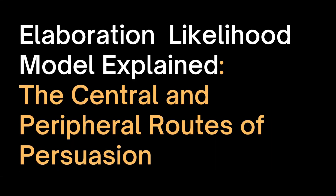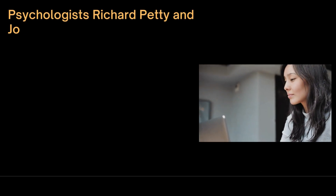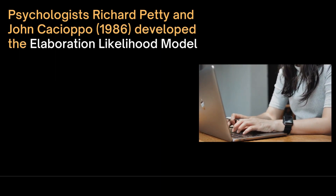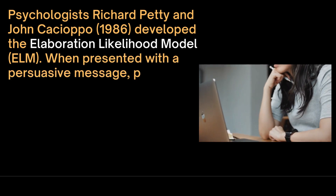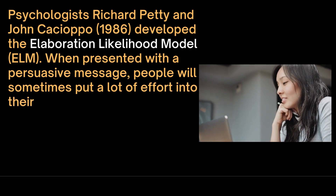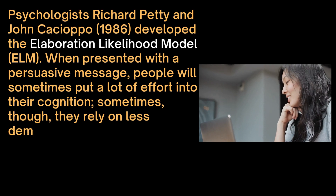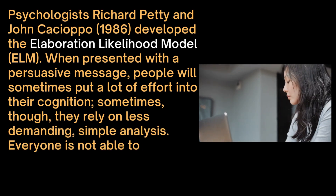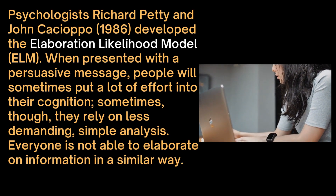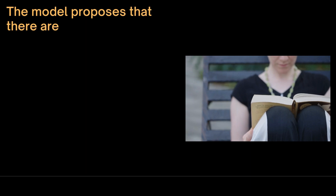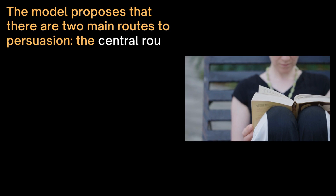In the Central Route of Persuasion, people consider the core content of the message. In the Peripheral Route, they might regard other things like the likability of the sender, for example. Unlike single effect models, the Elaboration Likelihood Model is a dual information processing model. Psychologists Richard Petty and John Cacioppo in 1986 developed the Elaboration Likelihood Model. The model proposes that there are two main routes to persuasion: the Central Route and the Peripheral Route.